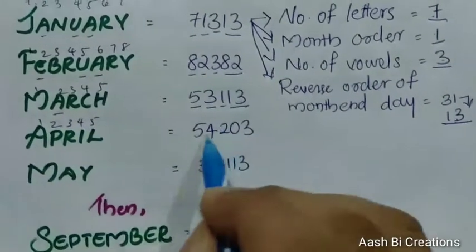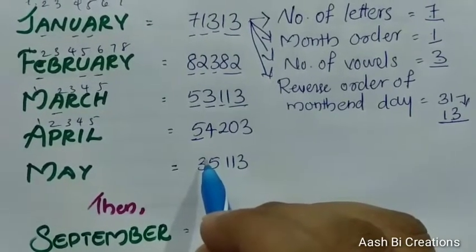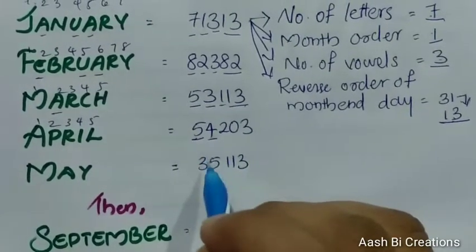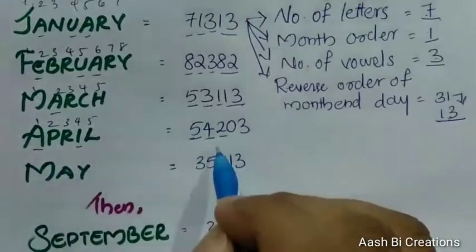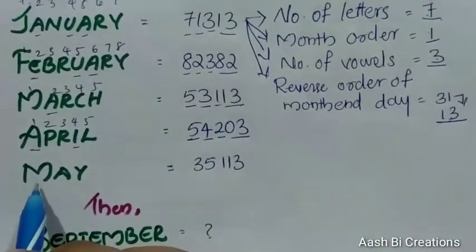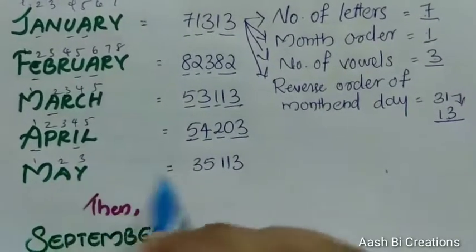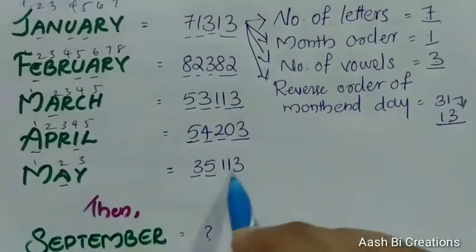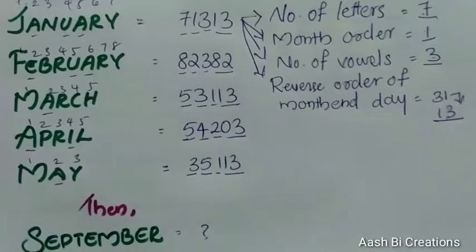April — number of letters is 5. Okay, month order: 4, 4, 4. The month of order is 5. That's correct. The month of order is 3, so this is 3 vowels. We use 3 letters — our 3 letters are correct. That's correct. We use 3 letters on the same way.